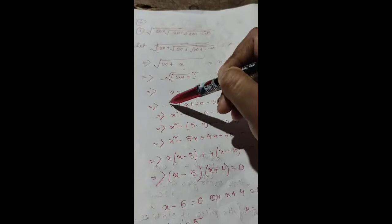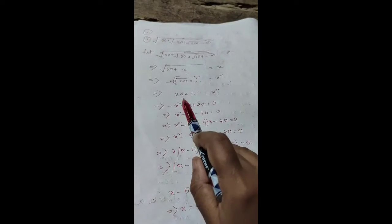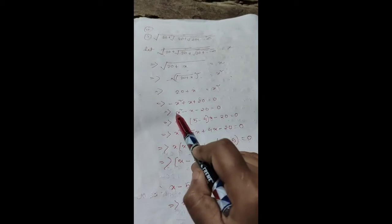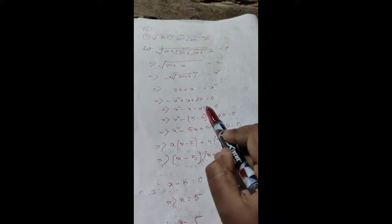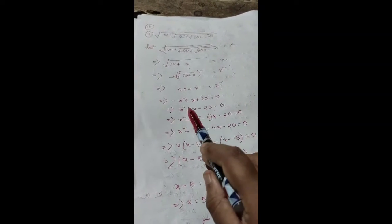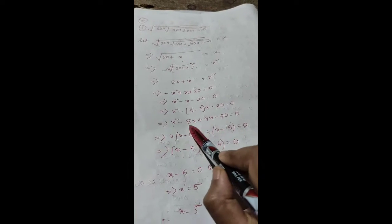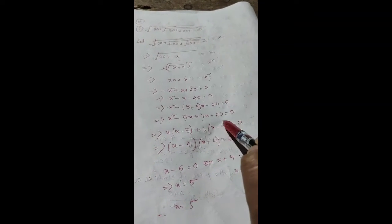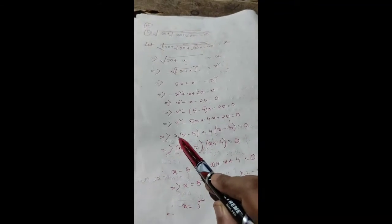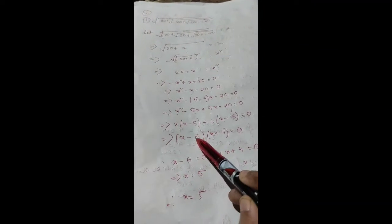Squaring gives x² = 20 + x. Moving to left hand side: x² - x - 20 = 0. Factoring 20 as 5 times 4: x² - 5x + 4x - 20 = 0. Taking x common: x(x-5) + 4(x-5) = 0.